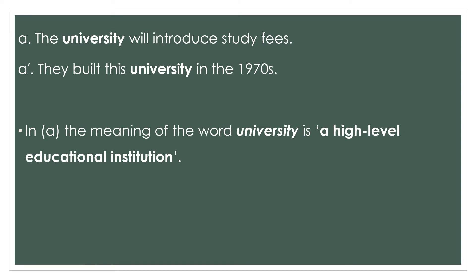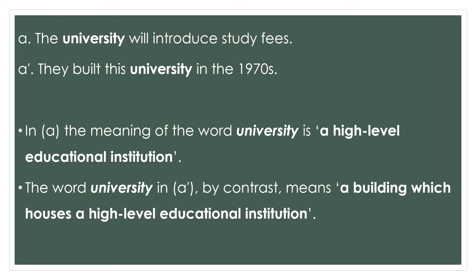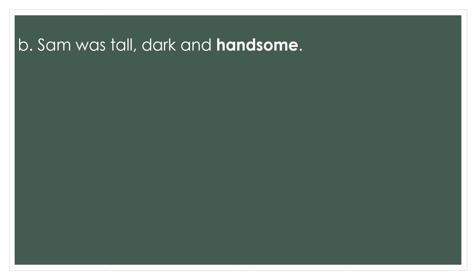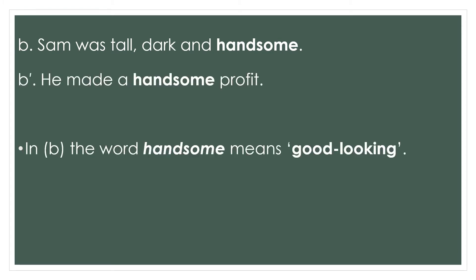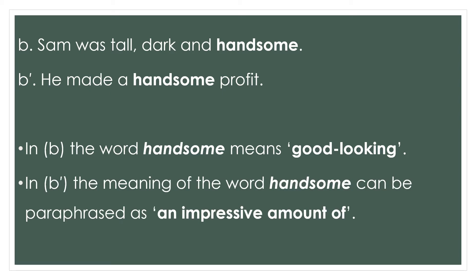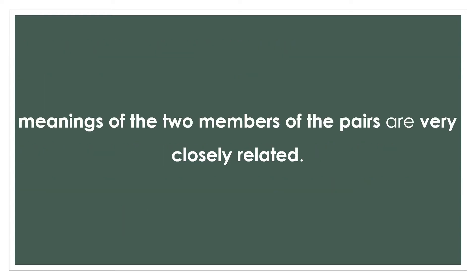The word 'university' in the first sentence means a high-level educational institution, but in the second sentence 'university' means a building. For 'handsome': in the first sentence, 'Sam was tall and handsome' — handsome means good-looking. But in a second sentence, handsome means an impressive amount, as in he made an impressive amount of profit.